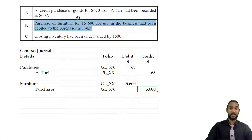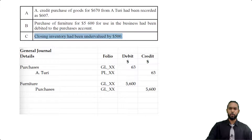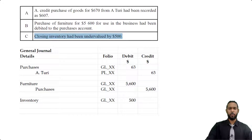Let's take a look at the final error: closing inventory had been undervalued by $500. Inventory is an asset. If it's undervalued, the asset balance is too low, so we have to increase it by debiting the asset account — we debit inventory $500. Was there any other account affected by this error? No, there wasn't. Therefore we use the suspense account to facilitate the double entry to correct this error. So that's the correction of these errors — it was worth seven marks.